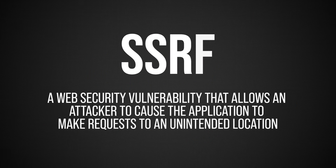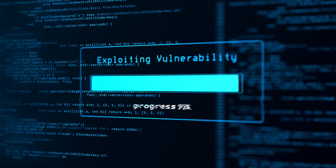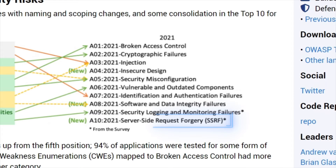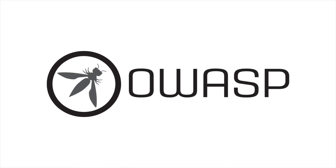SSRF is a type of vulnerability that allows the attacker to use the application to make requests to unintended locations, such as other internal services in the network where the application is hosted, or even external services that have a trust relationship between the application and that external service. This type of vulnerability can allow an attacker to gain unauthorized access to services and data of the organization. It could also, in some cases, lead to arbitrary command execution. In fact, it's considered to be the 10th most critical security risk facing web applications today, according to the OWASP top 10 list.